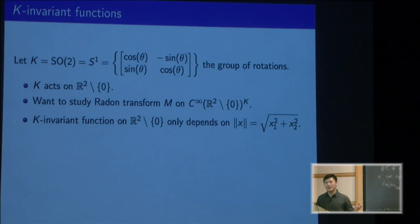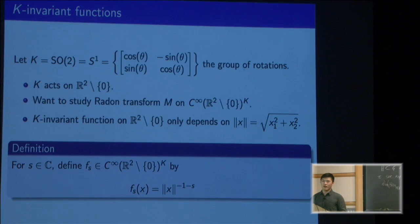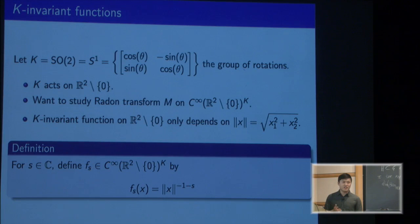If a function is rotation invariant, it only depends on the norm of the vector. That means we're really considering just functions that depend on the norm, which is a positive real number. The nicest such functions are just characters of the real numbers.